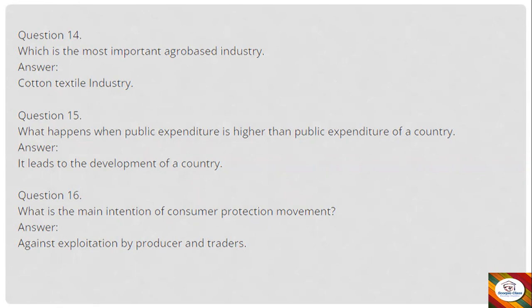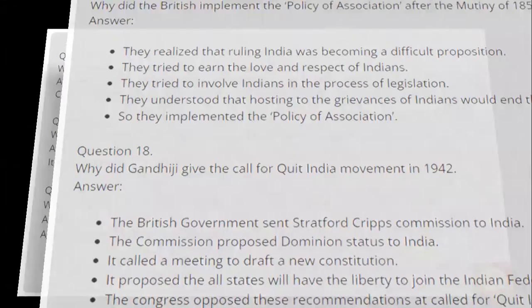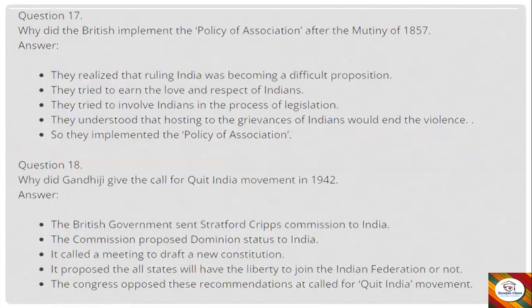Question 16: What is the main intention of the consumer protection movement? Answer: To go against exploitation by producers and traders. Question 17: Why did the British implement the policy of association after the Mutiny of 1857?